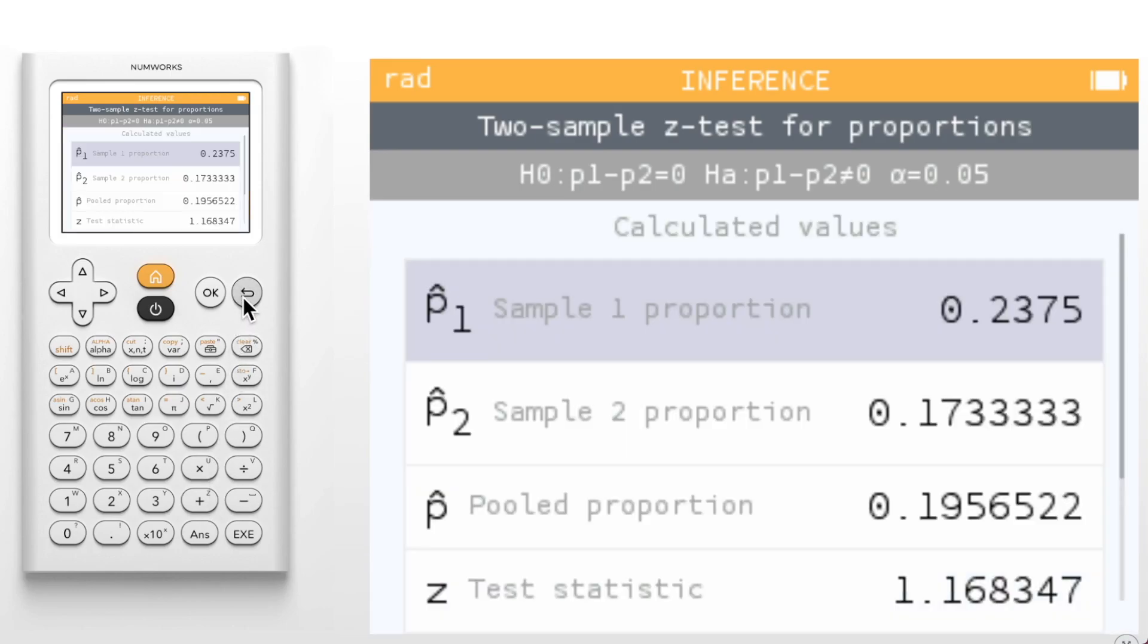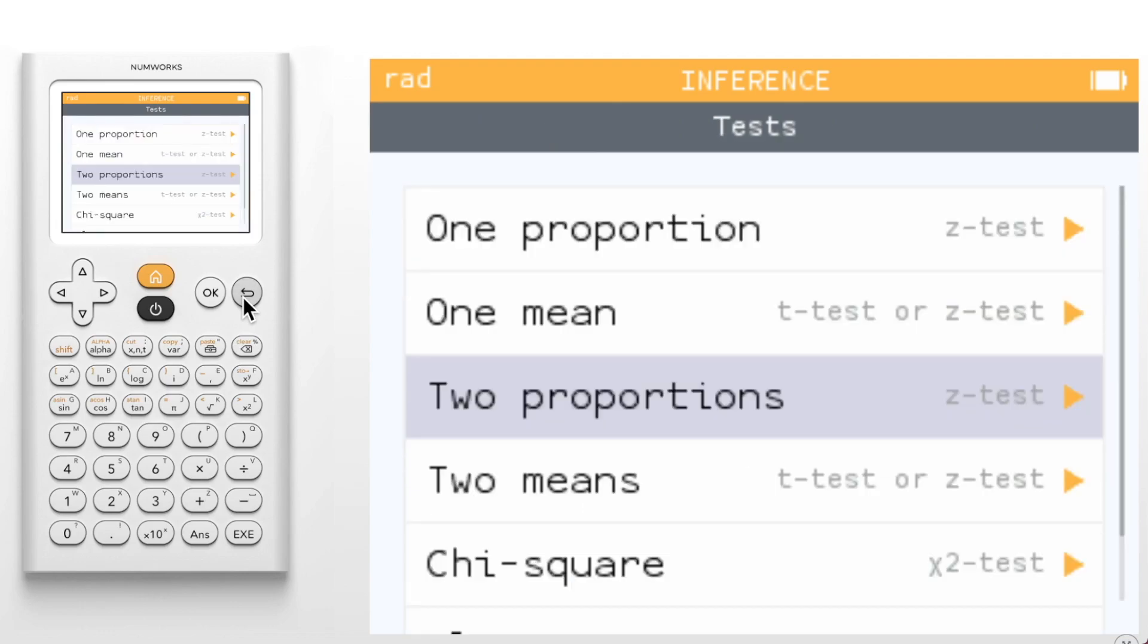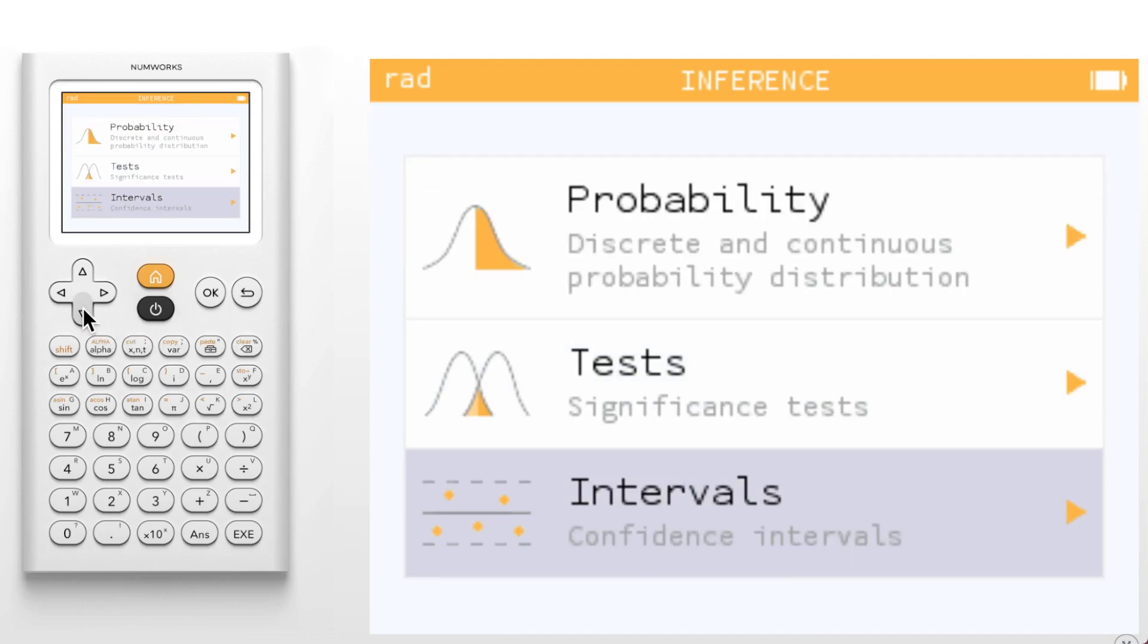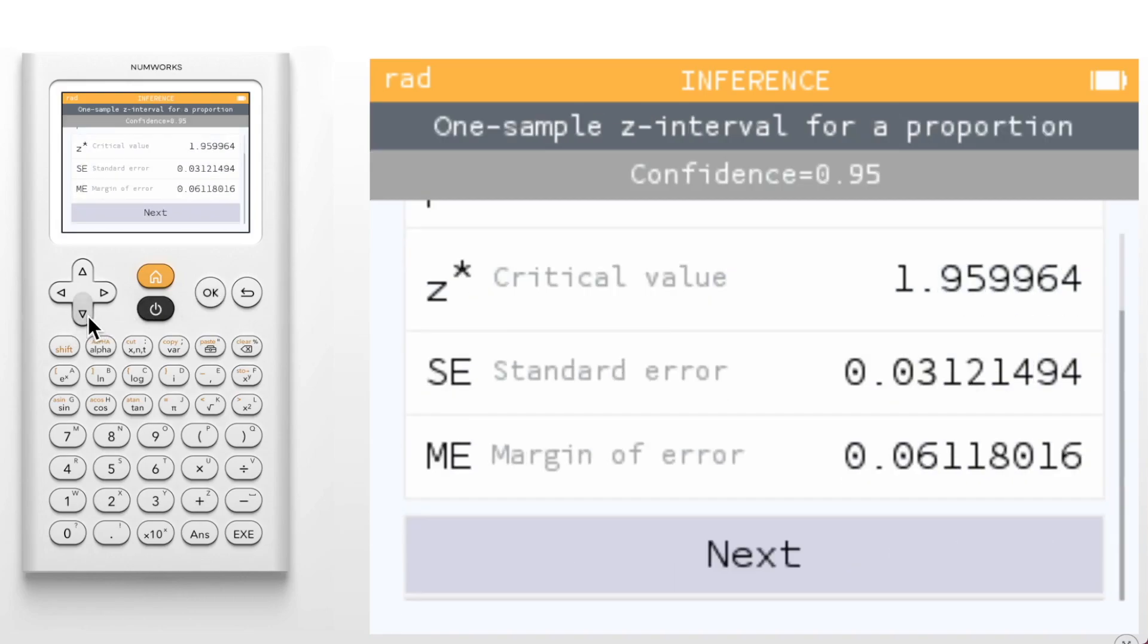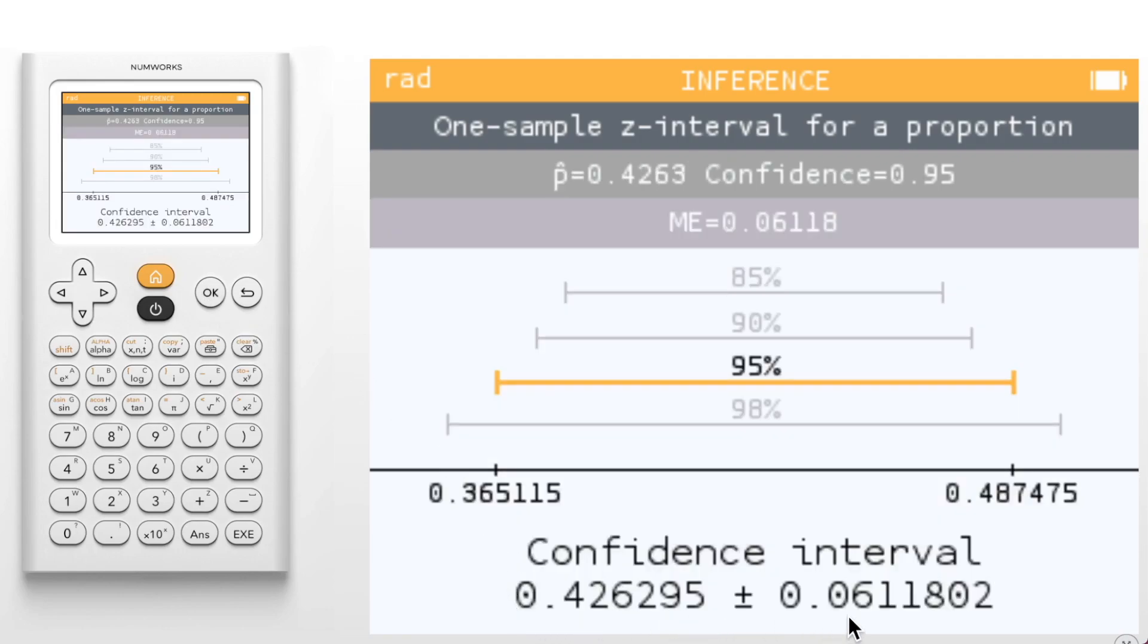Returning to the main inference screen, we also note that there is a new visual for confidence intervals. This time we'll select one proportion and again use all the default values. On the final screen, we see the point estimate and margin of error at the very bottom. Above this, we do see a number line with the endpoints of our interval marked and in yellow, we see our 95% confidence interval. Above and below, we can easily compare this interval to a higher and lower confidence level.